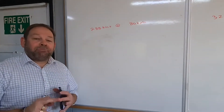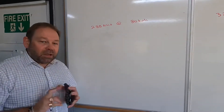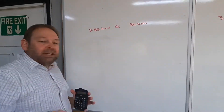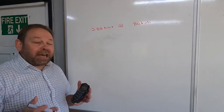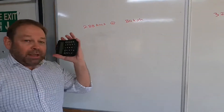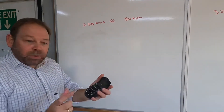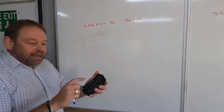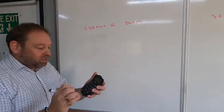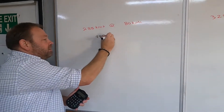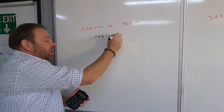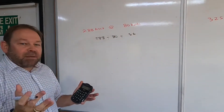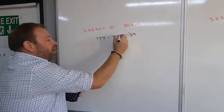We've got three examples today. First one: 288 kilometers at 80 kilometers per hour — we need to work out how long it's going to take to travel that distance. On the calculator, we're going to put 288 kilometers and divide it by the average speed, so 288 divided by 80.